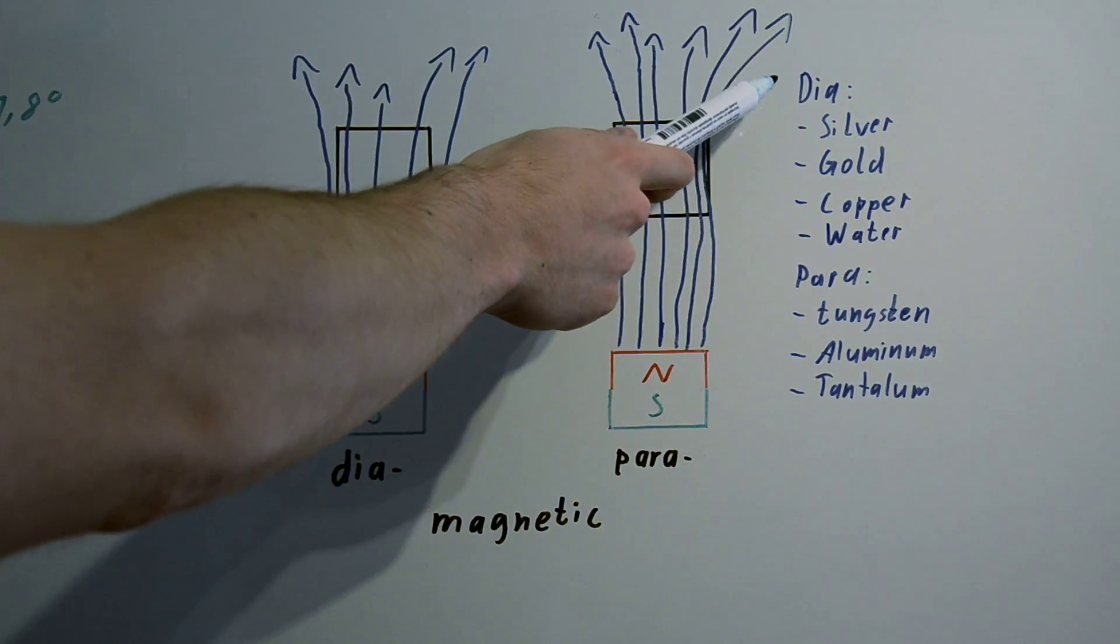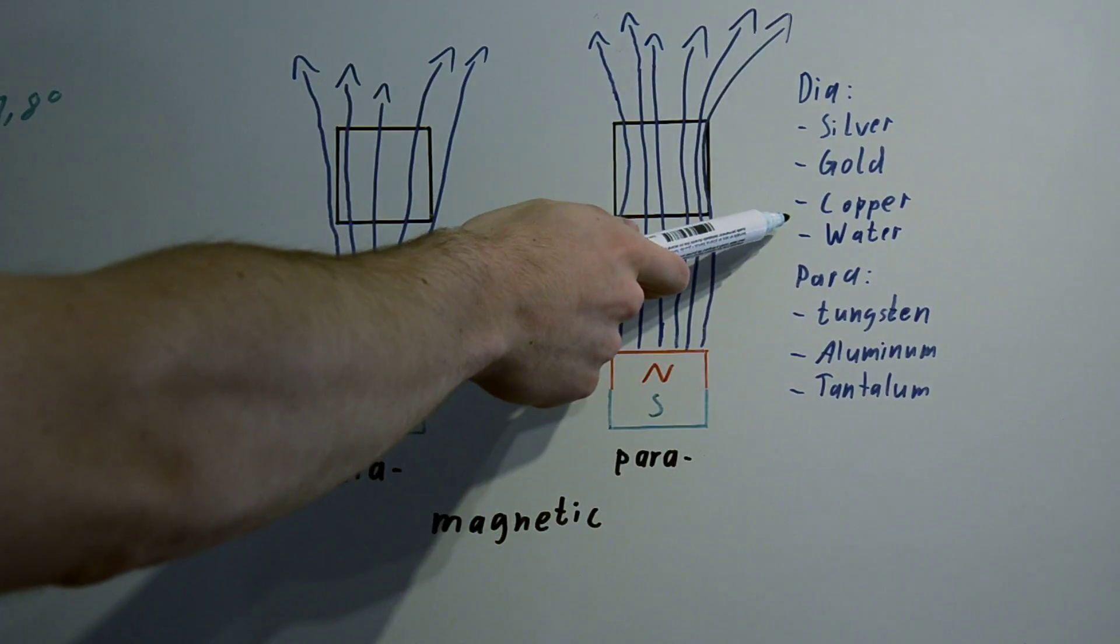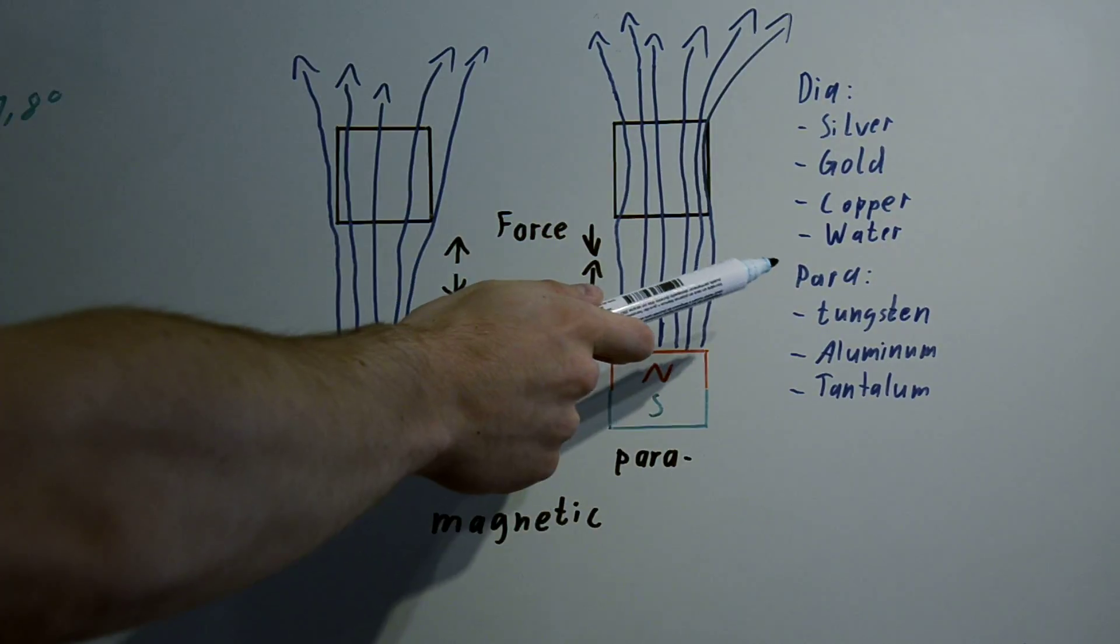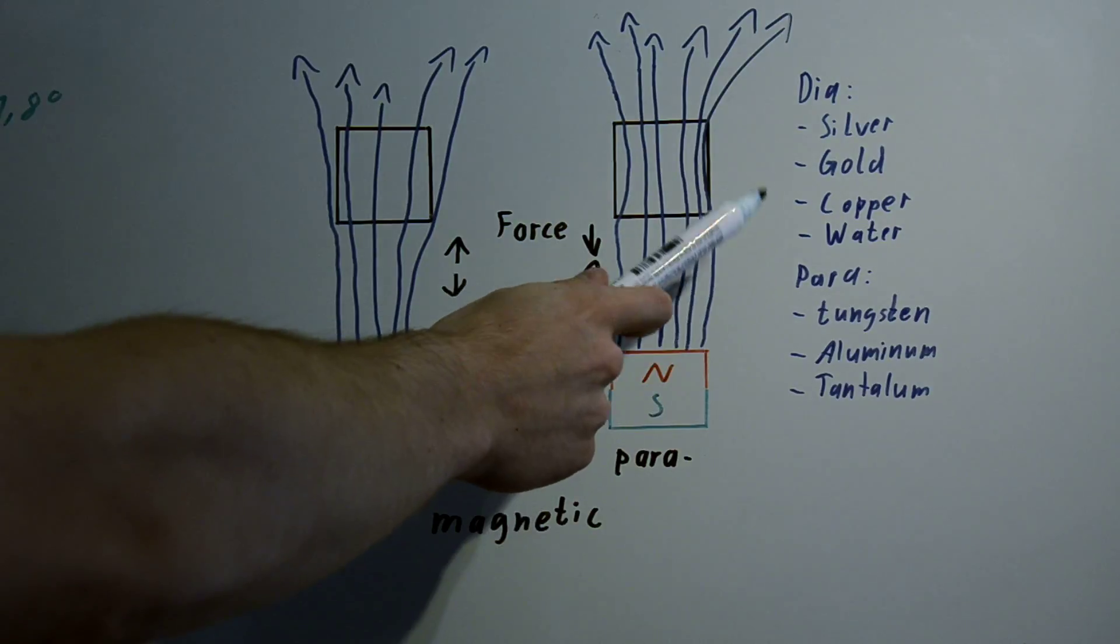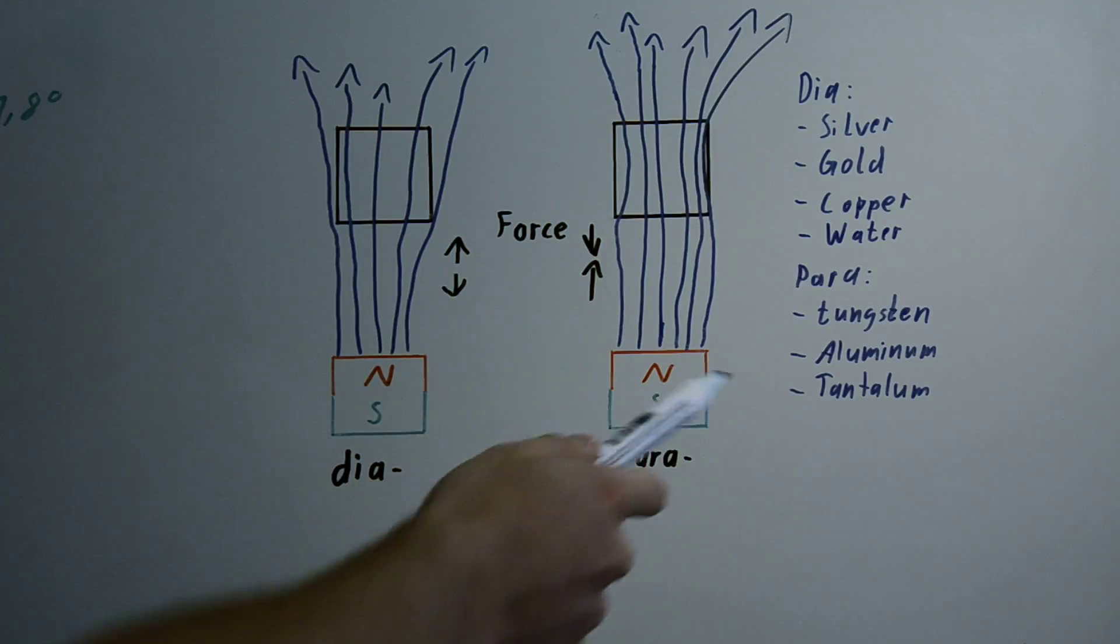Examples for diamagnetic materials are silver, gold, copper, and also water. Examples for paramagnetic substances are tungsten, aluminum, and tantalum.